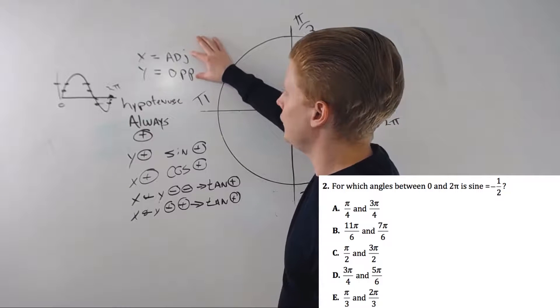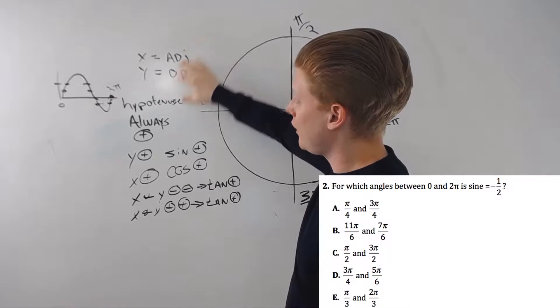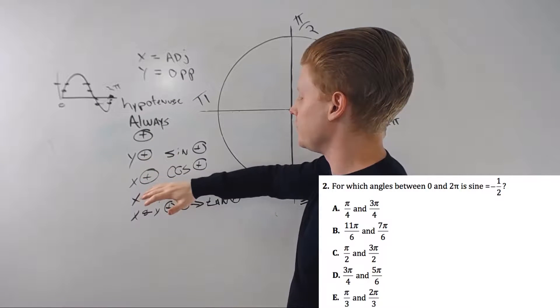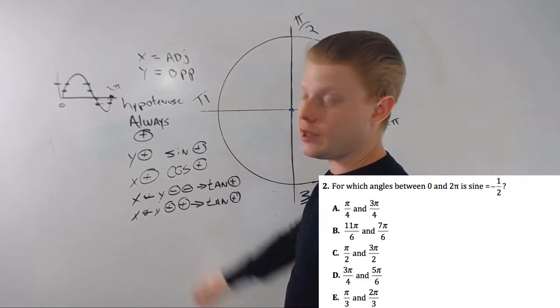Second video: x is adjacent, y is opposite every single time. Hypotenuse is always positive. If y is positive, sine is positive. If x is positive, cosine is positive. Signs are the same, tan is positive.